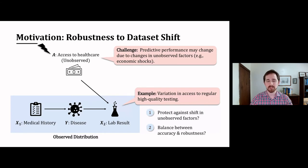This raises two questions. First, how do we protect against shifts in unobserved variables in the first place? And second, how do we balance accuracy and robustness? In this example, the most robust model might be one that doesn't use laboratory testing at all, but this might be a step too far, particularly if we don't think that interventions on A will change distribution too much.